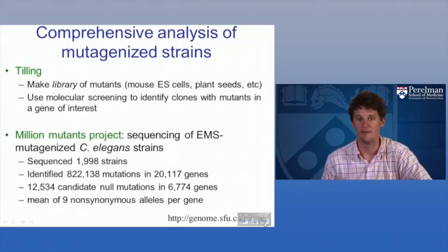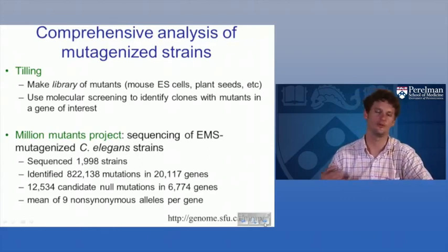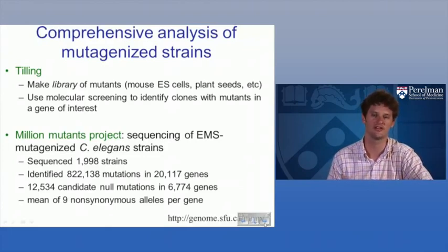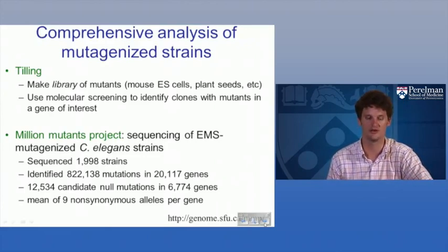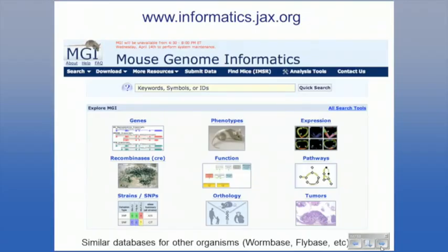A similar project in C. elegans is the Million Mutants Project, led by Bob Waterston and Don Moerman, where they've sequenced nearly 2,000 strains from EMS mutagenesis, intercrossed to be as close as possible to homozygous for a collection of mutations. By sequencing these 2,000 strains they've identified 800,000 mutations — about 400 per strain. Many are putative null mutations — strong splice site mutations, early stop codons — though only about a third of genes have strong nulls. They have on average 9 other alleles per gene, so even for genes where a deletion allele would be lethal, you can find partial loss-of-function alleles. There are many tools listed at the Jackson Lab website for mouse genetics, and similar databases for worm, fly, and yeast.